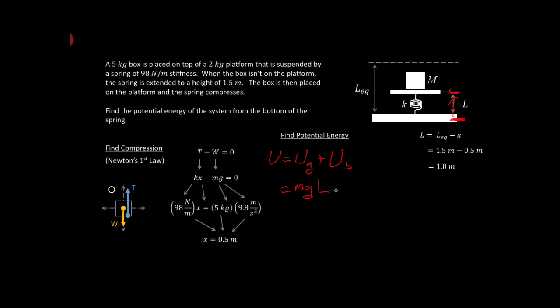And then we have to do the spring potential energy, and that was one-half K, this 98 newtons per meter, times x squared, where x is the compression or extension. And in this case, that x is the compression.